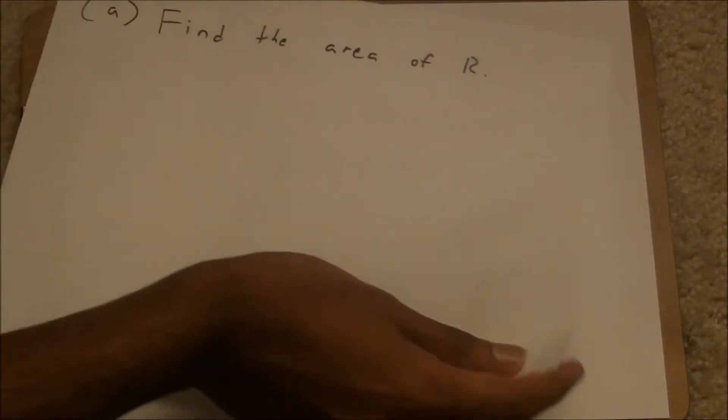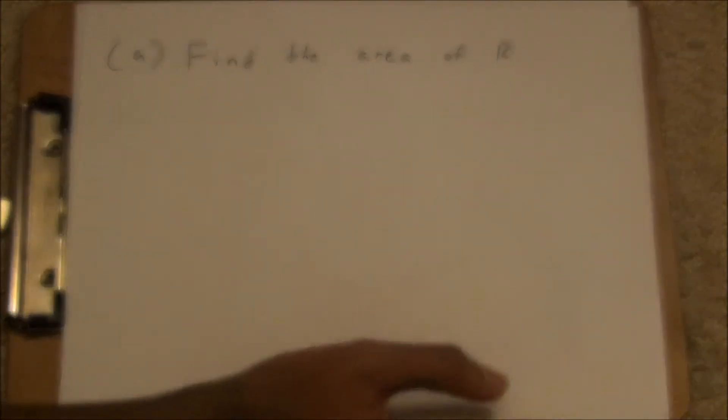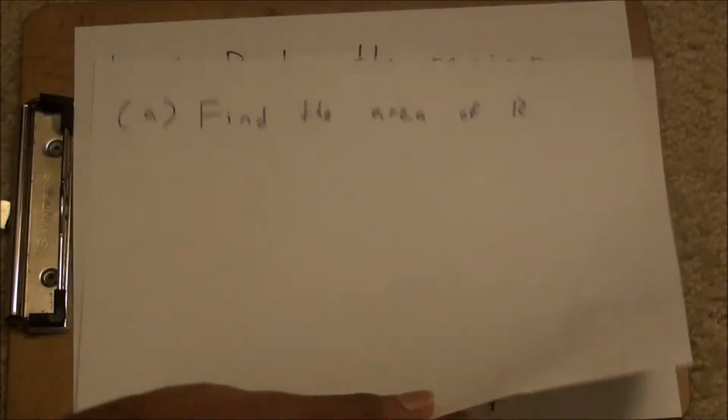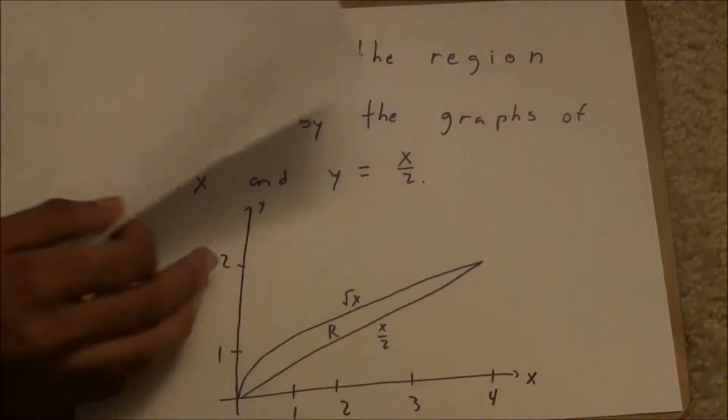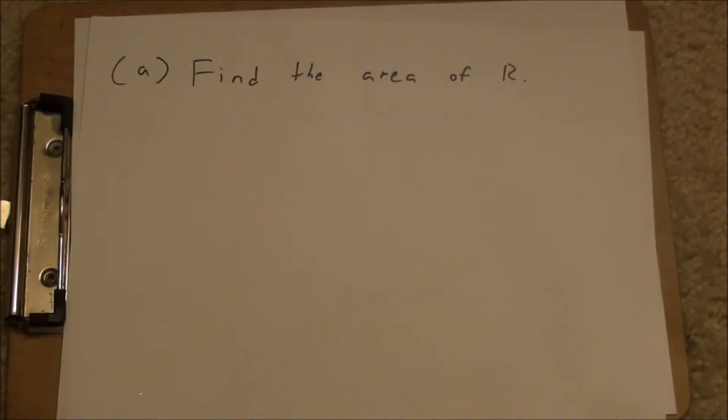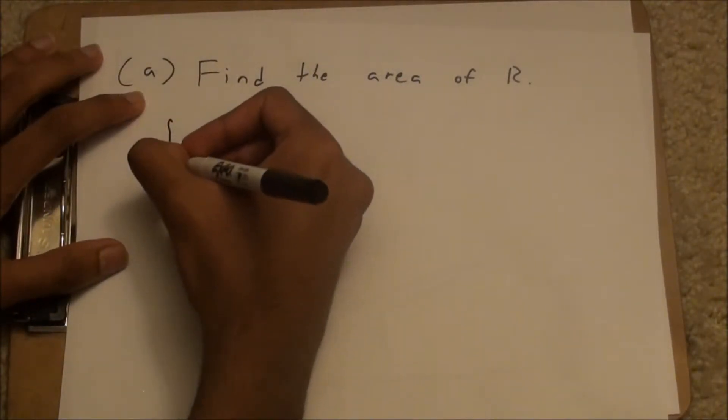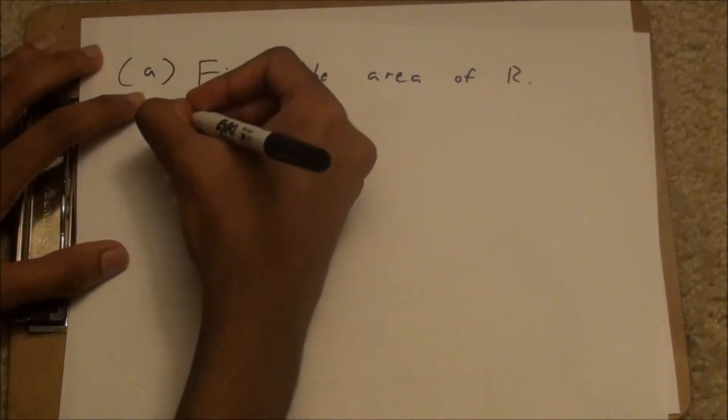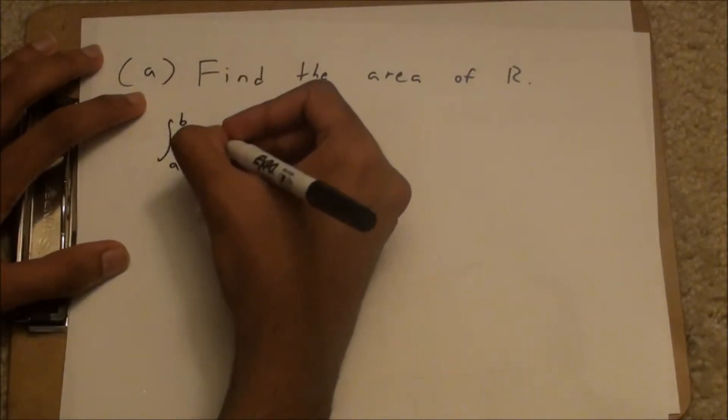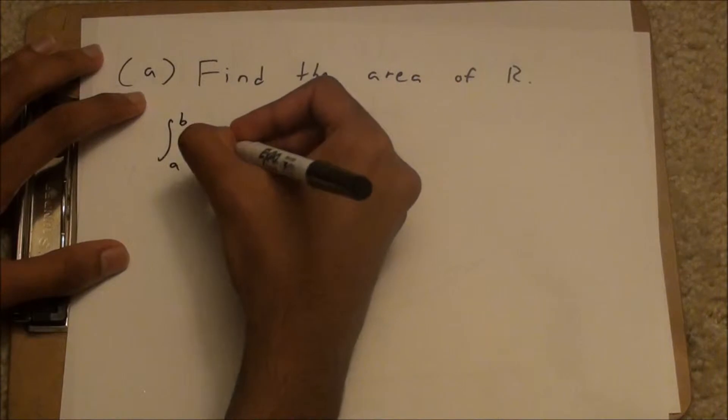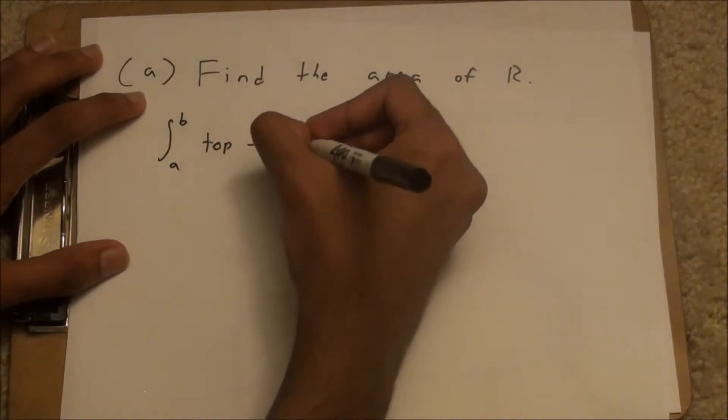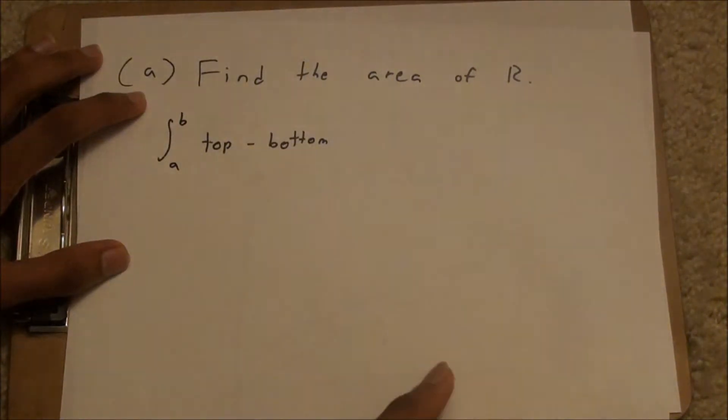The first part of this problem says, find the area of R. That's easy. Just look at the graph, and you would use this formula, the integral from your limits of integration a to b. And you have the top minus the bottom functions, or the greater versus lesser functions.